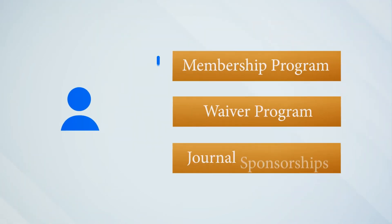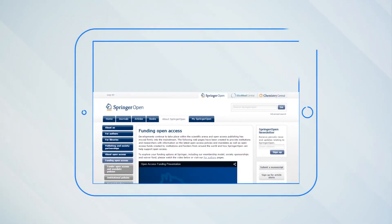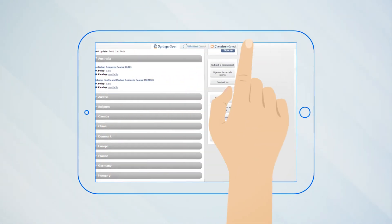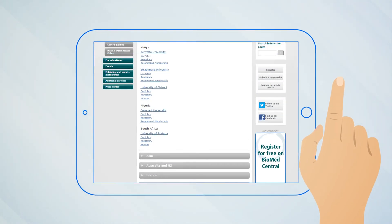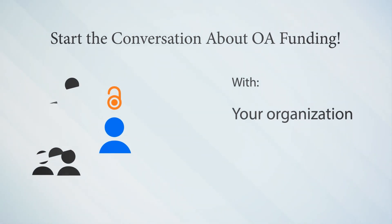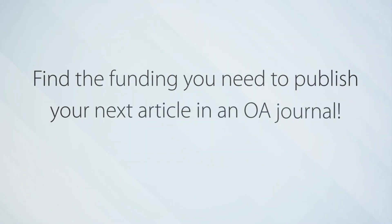With so many ways to get funding, you can find a way to cover your next APC. Visit the Springer Open or BioMed Central website for more information — our funding database provides a list of funders and institutions that have funding available. It's also always advisable to check with your institution or university directly, as they sometimes have money available but don't promote it externally. Start the conversation about funding at your own organization, encourage more support for open research, and find the funding you need to publish your next article in an open access journal.